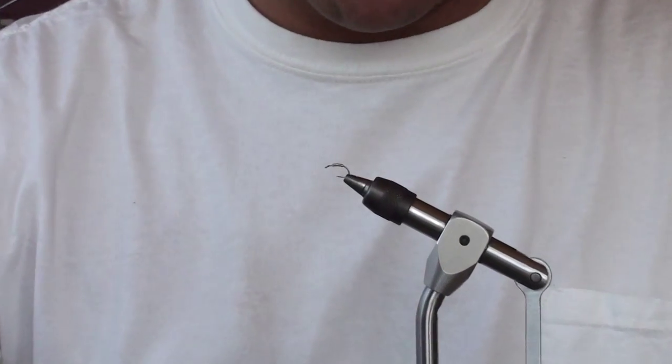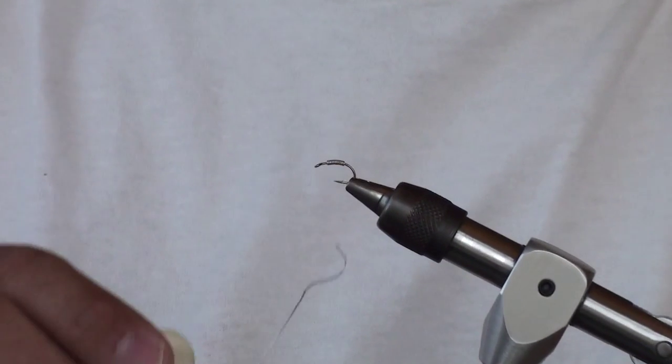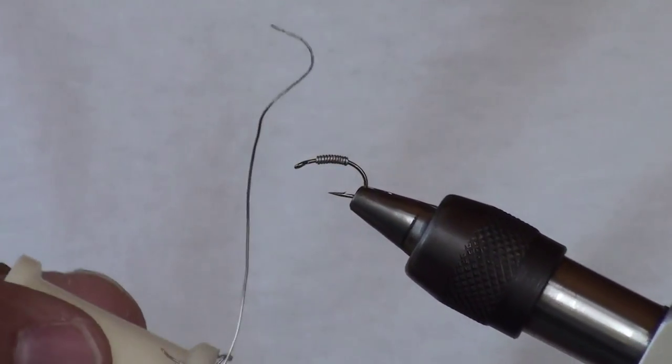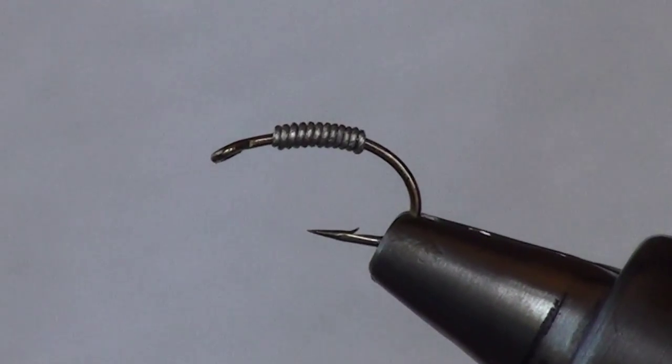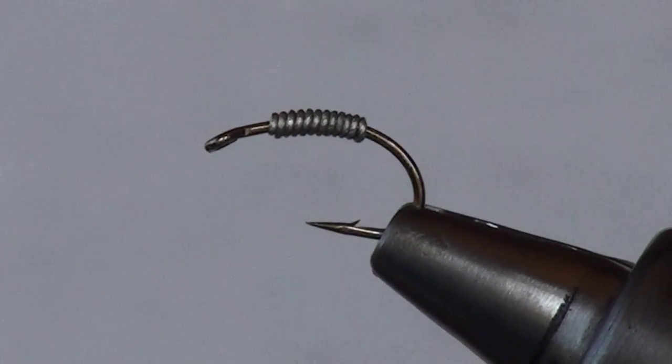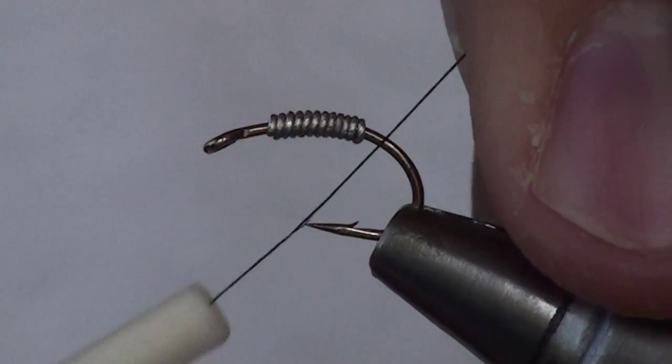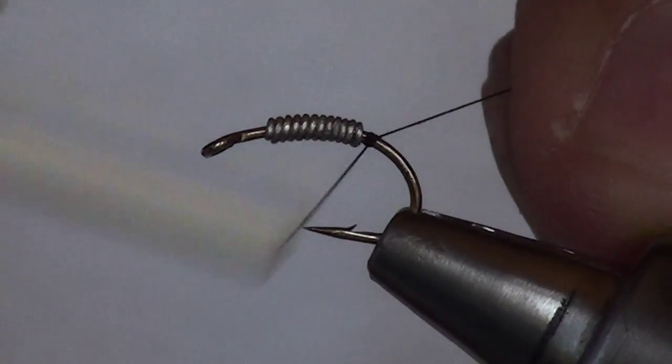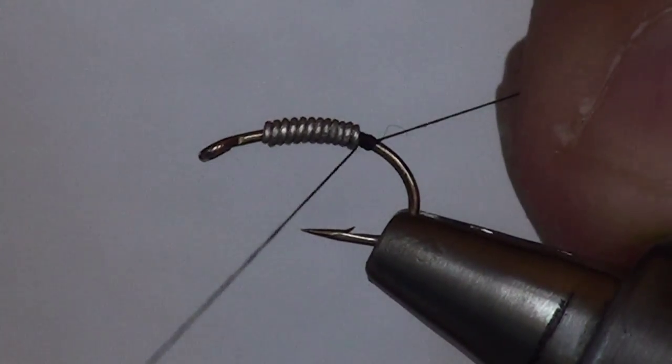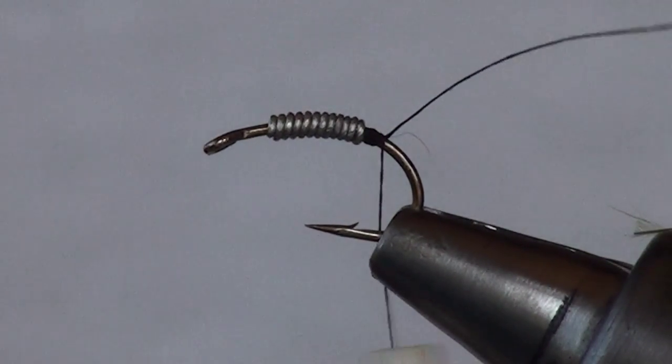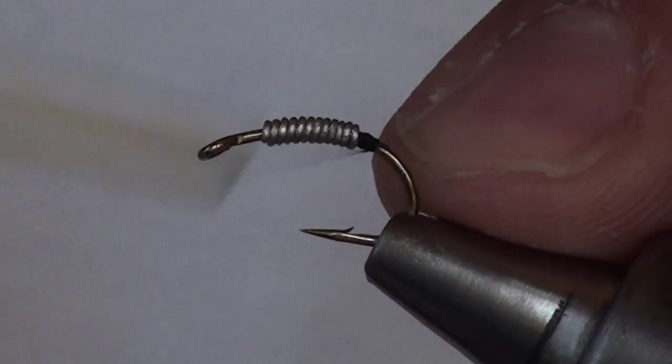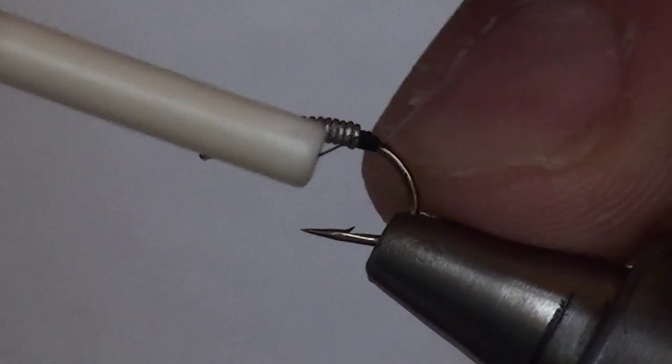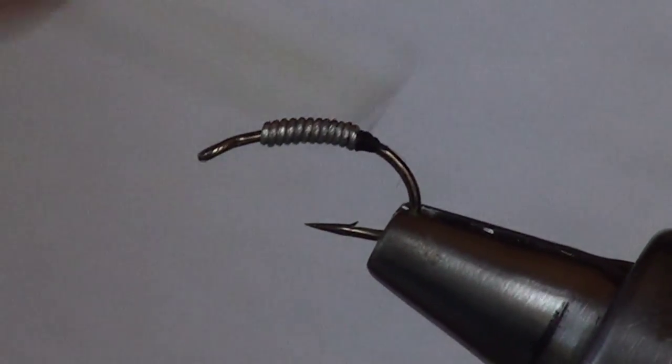I begin with that in the vise and I've taken some very light lead wire and wrapped, I think I've got 10 wraps on here, just to give it some weight because I'm not going to be using a bead. I'm using 6-0 black thread and I begin the thread in the back here, creating a taper behind the weight so that I've got a gradual ramp from the hook shank up to the weight.